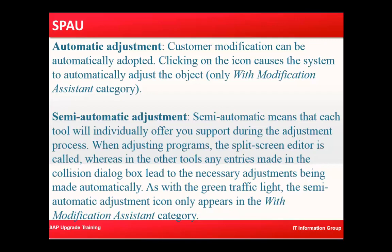Semi-automatic adjustment means that each tool will individually offer you support during the adjustment process. When adjusting programs, the split screen editor is called, whereas in other tools any entries made in the collision dialog box lead to the necessary adjustment being made automatically. The semi-automatic adjustment icon only appears in the with modification assistant category.